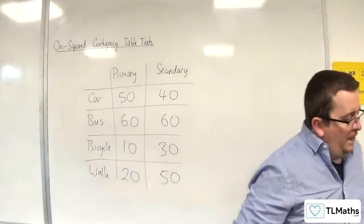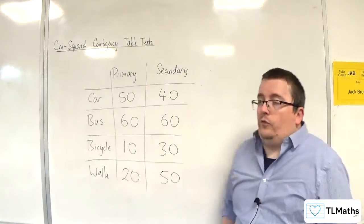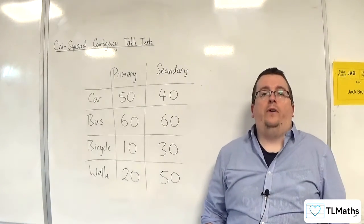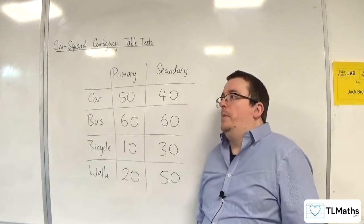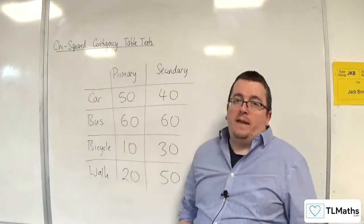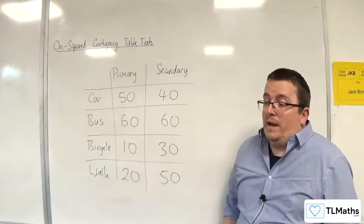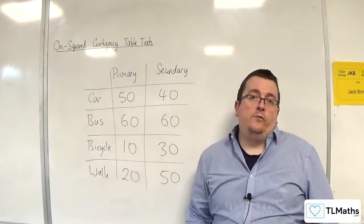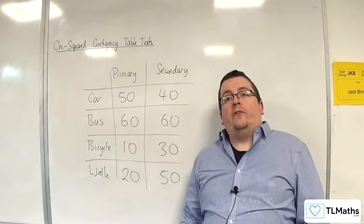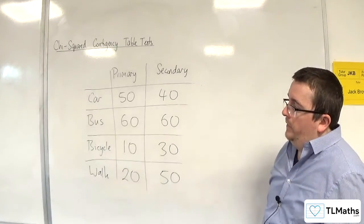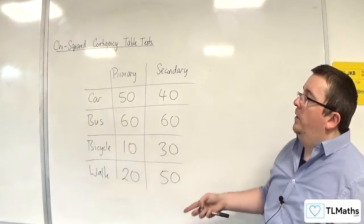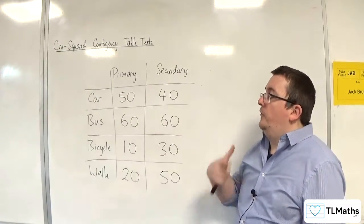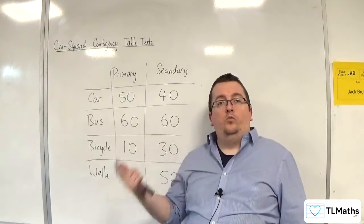What we then do is we assume that these variables are independent. Independence means that the probability of one event does not affect the probability of another event occurring. So we assume that they are independent and we work out expected frequencies for each of these — so assuming they're independent, what would you get?